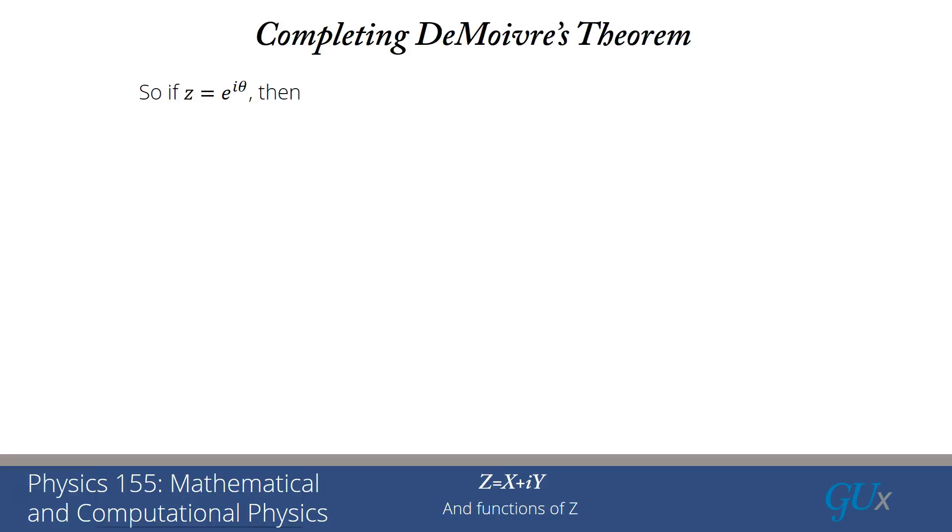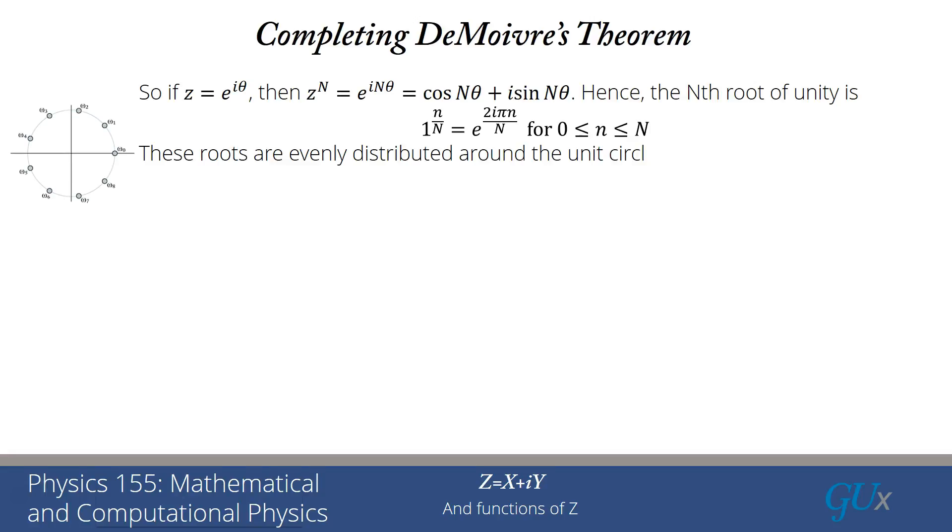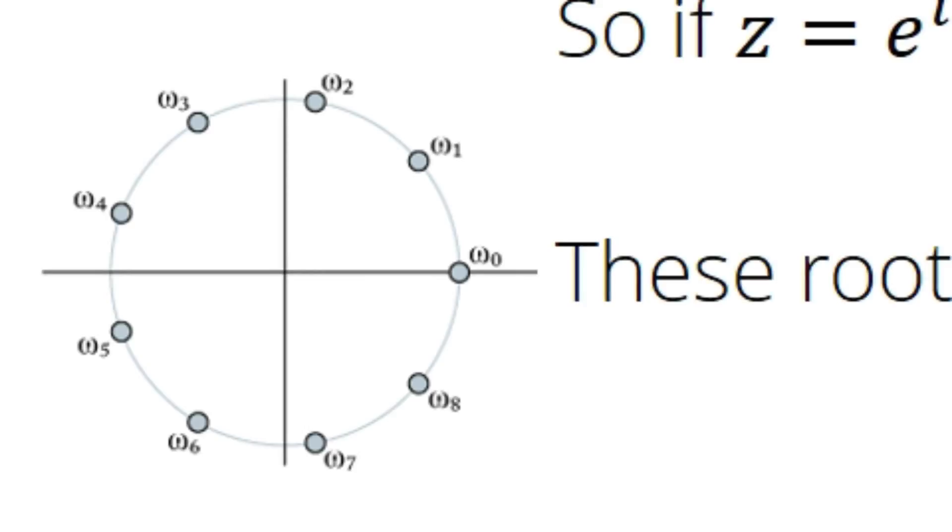Let's complete DeMoivre's Theorem. We assume z equals e to the i theta. Then z to the n is e to the i n theta, which is cosine n theta plus i sine n theta. If I want z to the n to equal 1, then I need n theta to equal a multiple of 2 pi. I write it as 2 pi i little n with 0 less than or equal to little n less than or equal to big n. Taking the nth root, I get e to the 2i pi little n over big n. These are the roots of unity, evenly distributed about the unit circle.